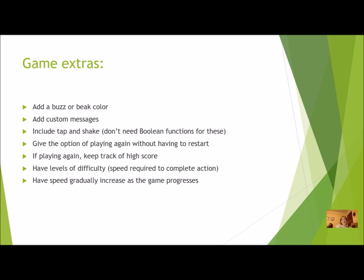Now that you've got the game done, what can you do to jazz it up? You can add a buzz or a color — as actions are performed, not only say whether it's correct, but make the beak turn a certain color. Think about other things the Finch can do besides just the accelerometer, and incorporate them in your game. You could also add custom messages: if they only get a few right, maybe a rude comment; between 5 and 20 correct, a different message; over 20, call them a rock star. You can also include tap and shake actions — those are already true/false, so you don't need extra boolean functions for them.